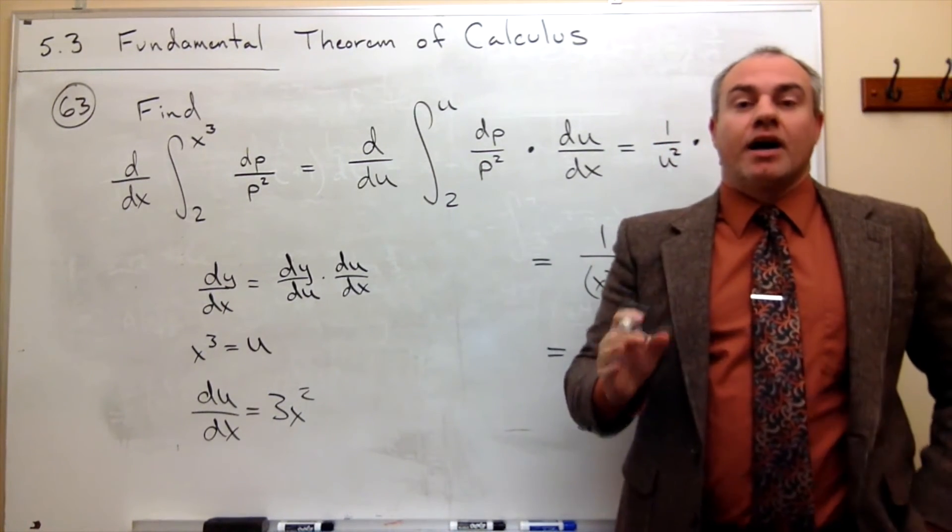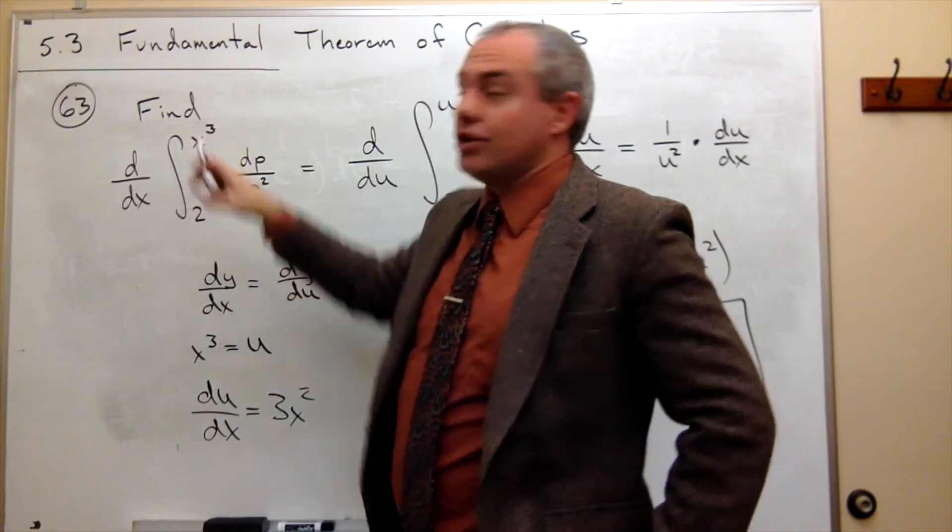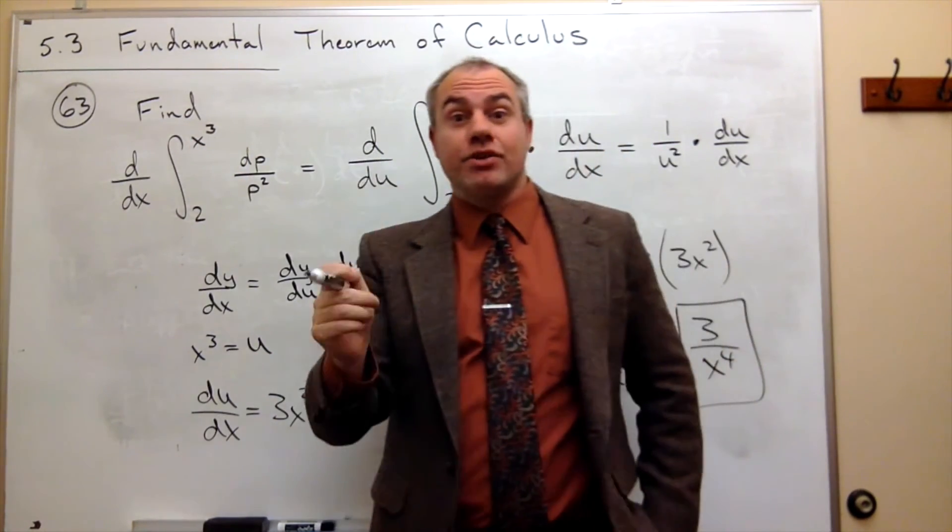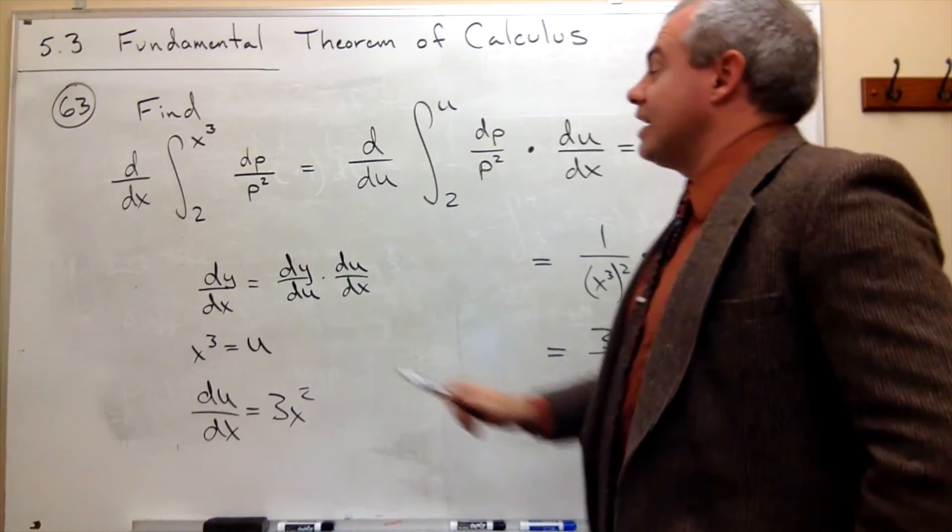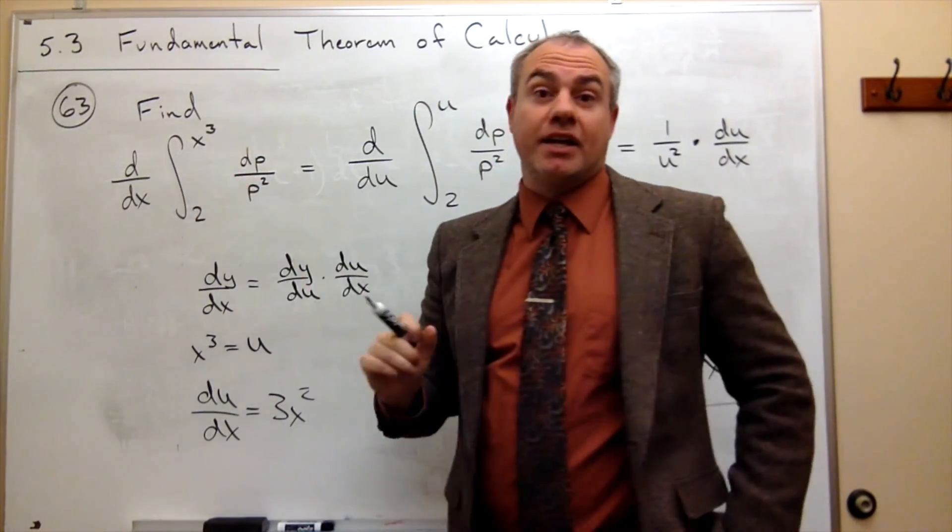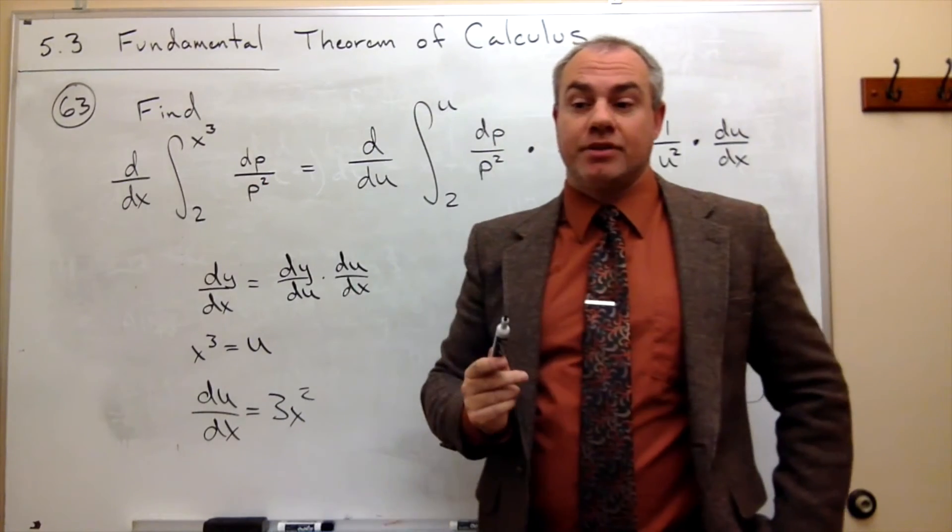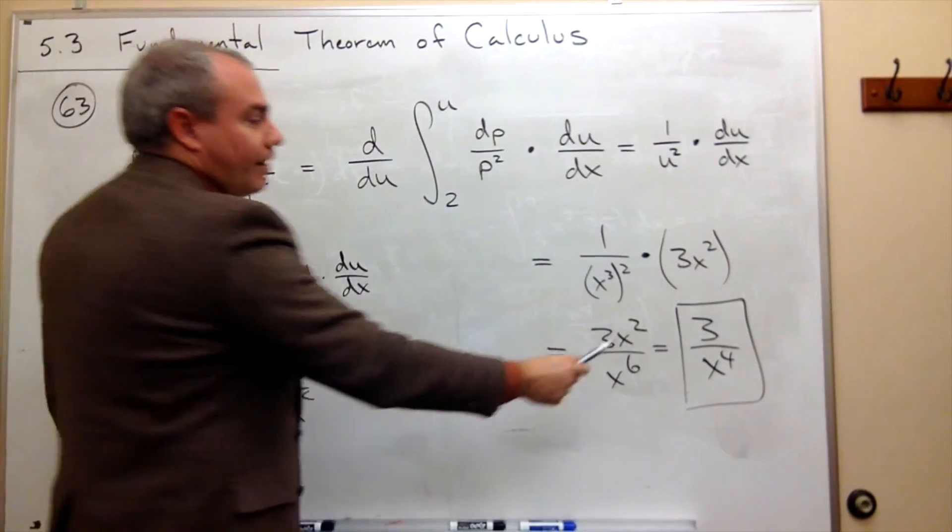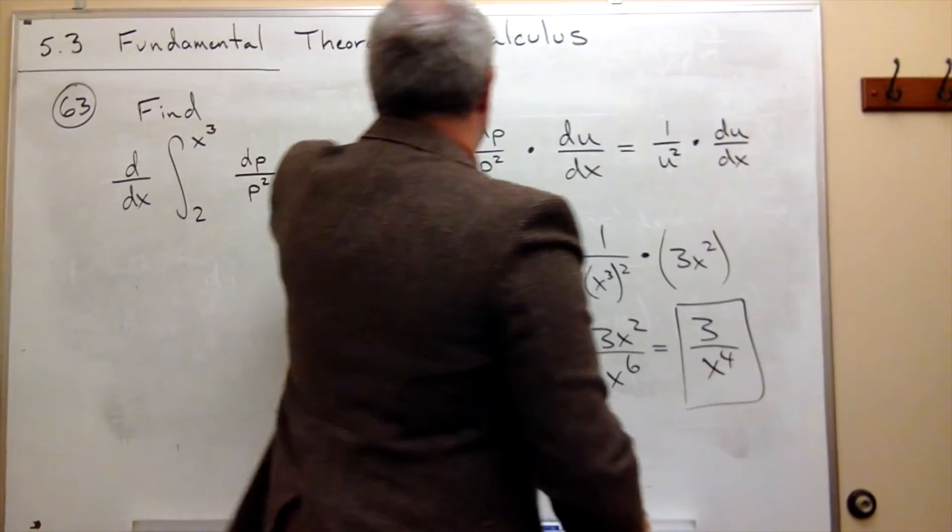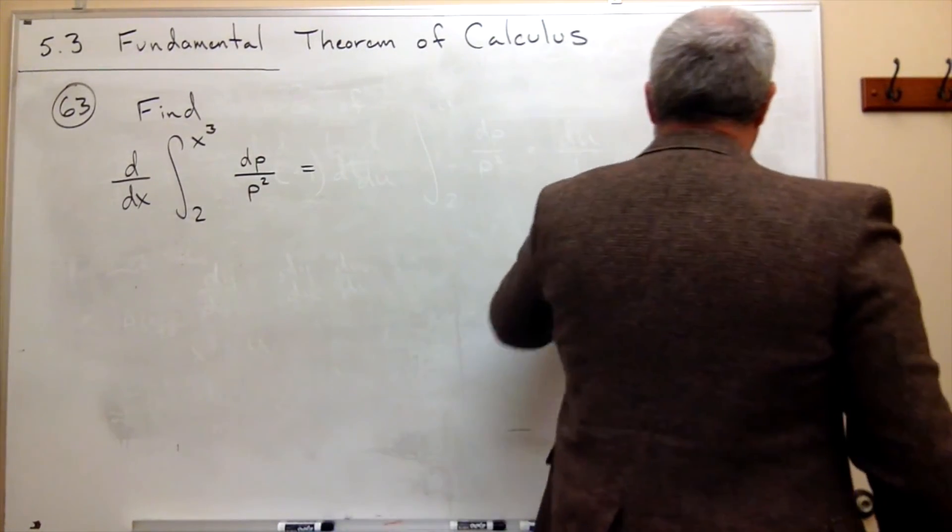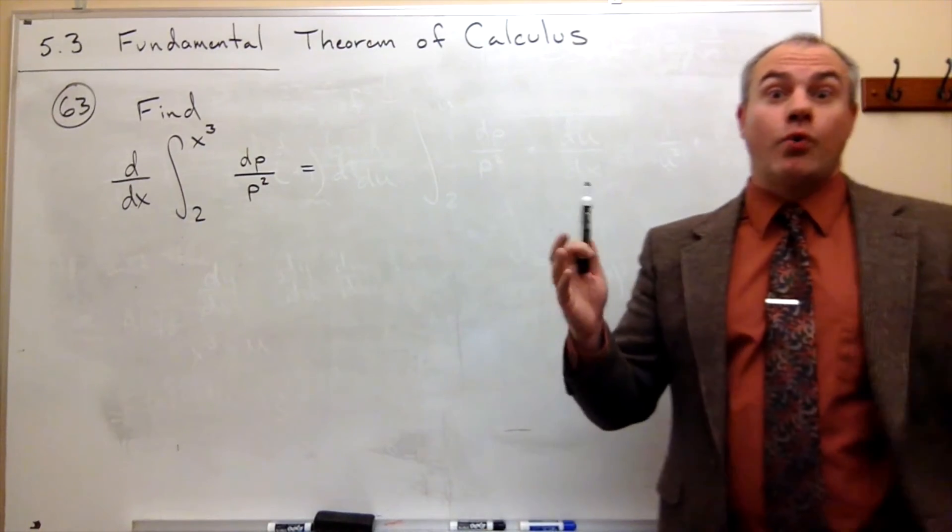I went through a big, long process to get there, right? I said there's a u, there's a dy/du, times du/dx. I plugged some things in. I got my answer. Here's the reality. I can do this much easier. What I can do is I can see it's going from a constant to x cubed, and I say, wait a second, x cubed is not the same thing as x. So what I need to do is I can still just take that x cubed and plug it in as if it were an x, as long as I remember to multiply by the derivative of x cubed. Let me show you what I mean.